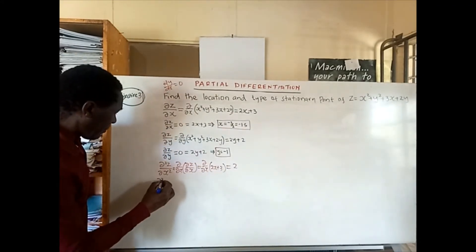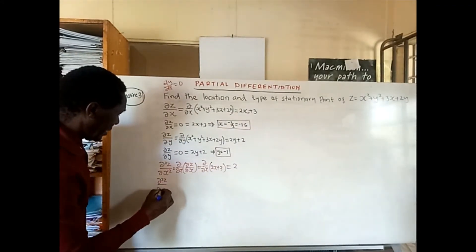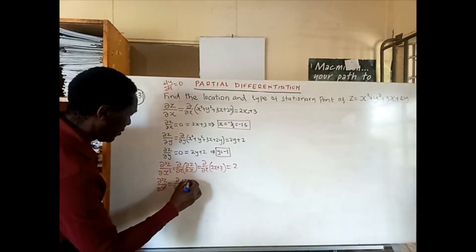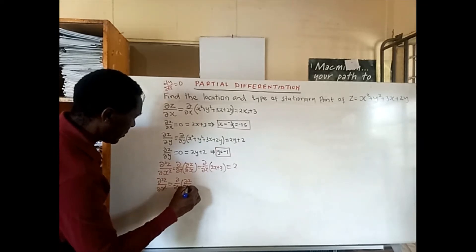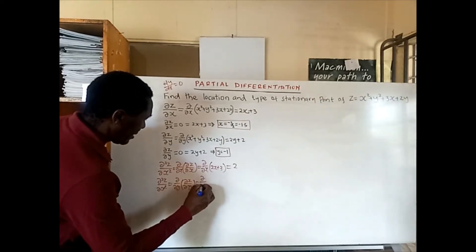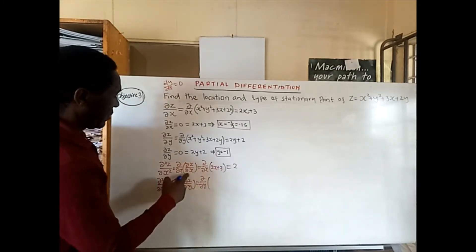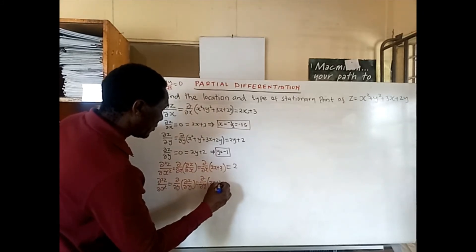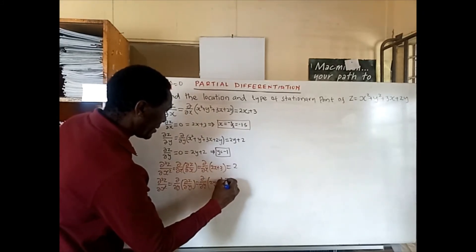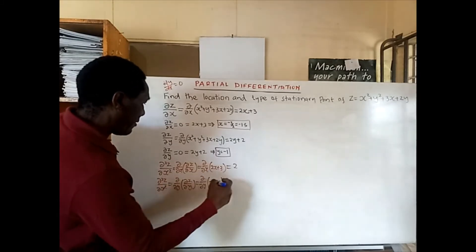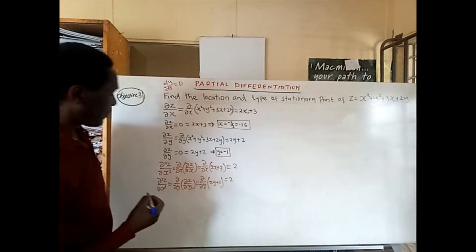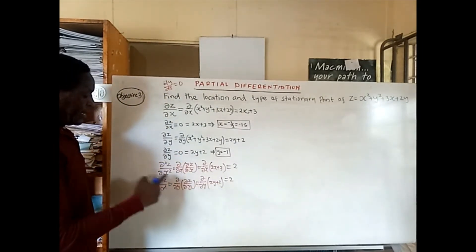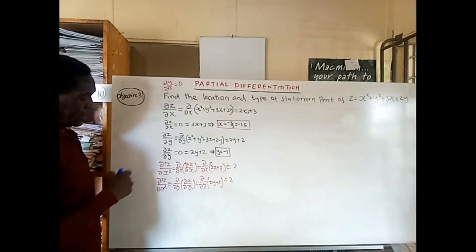Then we also get the second partial derivative of z with respect to y. This is the partial derivative with respect to y of the first partial derivative with respect to y, which was 2y plus 2. Differentiating that gives us positive 2 as well. So we have obtained both second partial derivatives of z with respect to x and with respect to y.